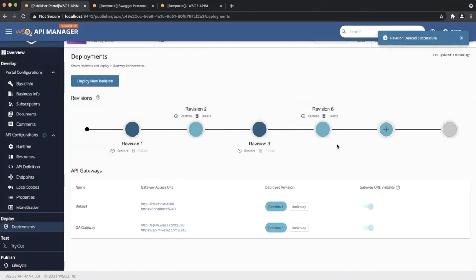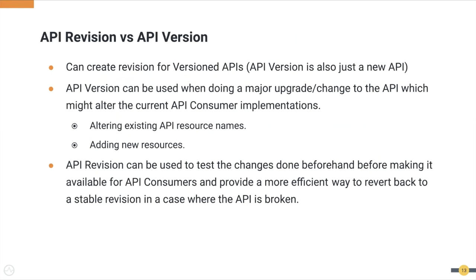Next, let's see the difference between API revision and API version. The developer can create revisions for versioned APIs as well. The API version is used in instances where performing alterations to an API would break or affect the consumer implementation contract, such as altering resource names or adding new resources. API revision can be used to test changes before making them available for API consumers, and as an efficient way to revert back to a stable revision in a case where the API is broken.